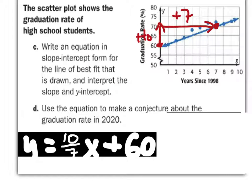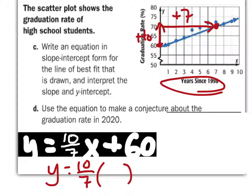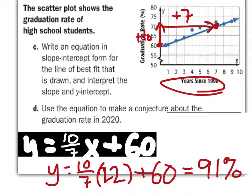What we've got to do right now is, we've got to say, well, y, which is the graduation rate, should be about 10 sevenths. What is x in the year 2020? Well, this is years since 1998. So, that would be about 22 years. And, then, you're going to add the 60. So, 10 sevenths times 22 is about 3.30. It'll be about 90. Maybe 91%.